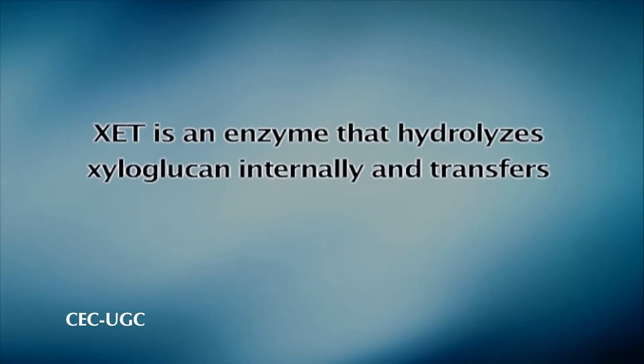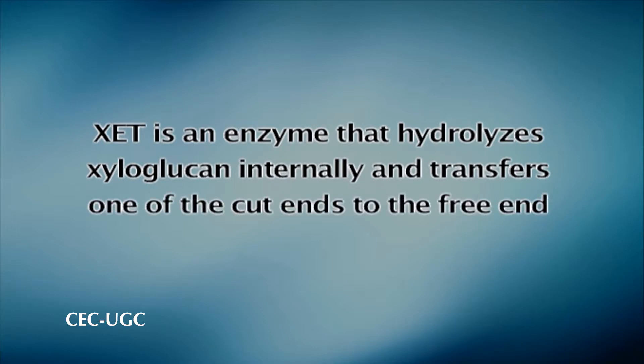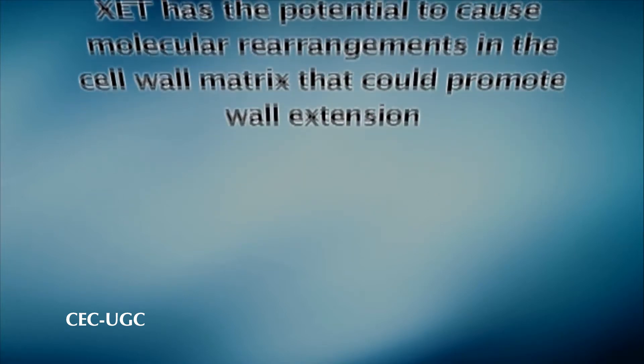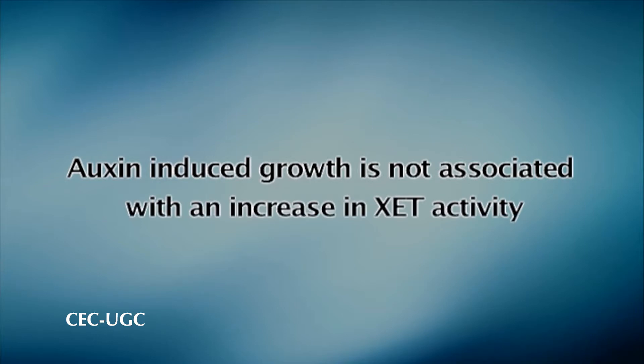Recently, a close correlation between GA-stimulated growth and the activity of the enzyme xyloglucan endotransglycosylase, represented as XET or Z, has been observed for many tissues. Z is an enzyme that hydrolyzes xyloglucan internally and transfers one of the free ends to an acceptor xyloglucan molecule. Z thus has the potential to cause molecular rearrangements in the cell wall matrix that could promote wall extension. Auxin-induced growth is not associated with an increase in Z activity, so this effect is specific to gibberellins. Whether Z alone can increase wall extensibility or whether it acts in concert with other cell wall loosening factors remains to be determined.